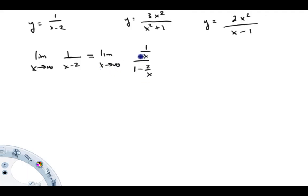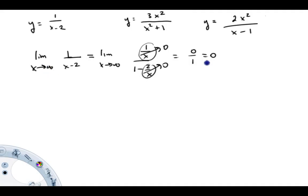As x goes to infinity, 1/x goes to zero, and 2/x also goes to zero. So this limit is zero over one, which is zero. What we just showed is that as x goes to plus infinity, y is going to zero. And if we change the limit to minus infinity, this still goes to zero over one, so the limit is still zero. Therefore, y equals zero is a horizontal asymptote of this function.